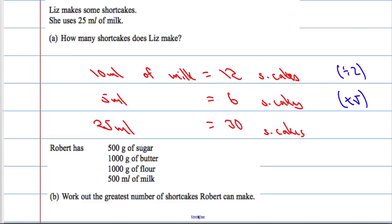Robert has 500g of sugar, 1000g of butter, 1000g of flour and 500ml of milk. Work out the greatest number of shortcakes that Robert can make.